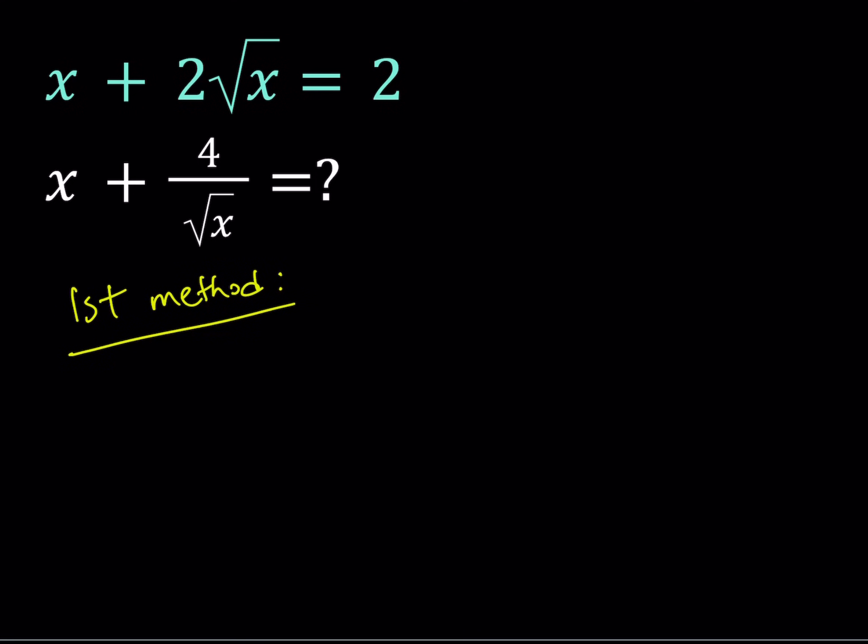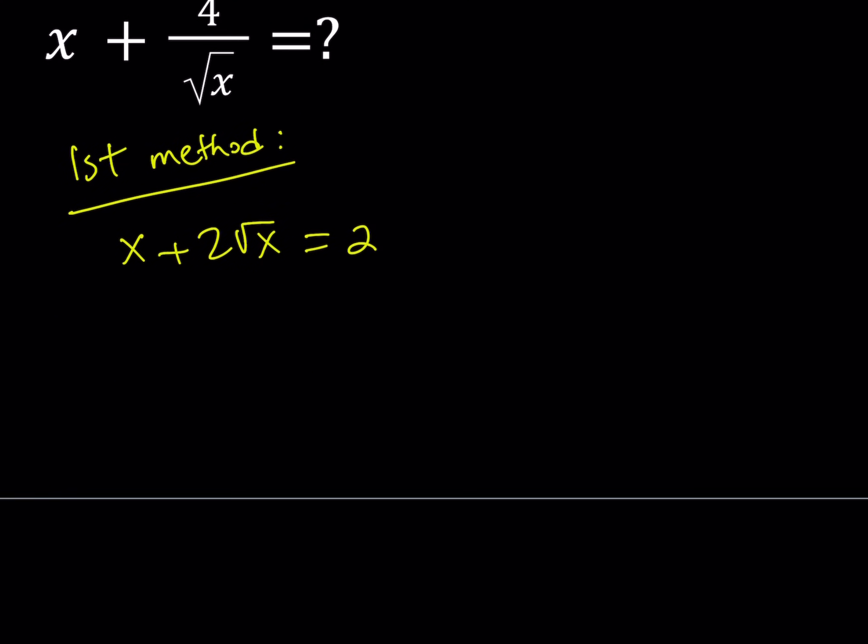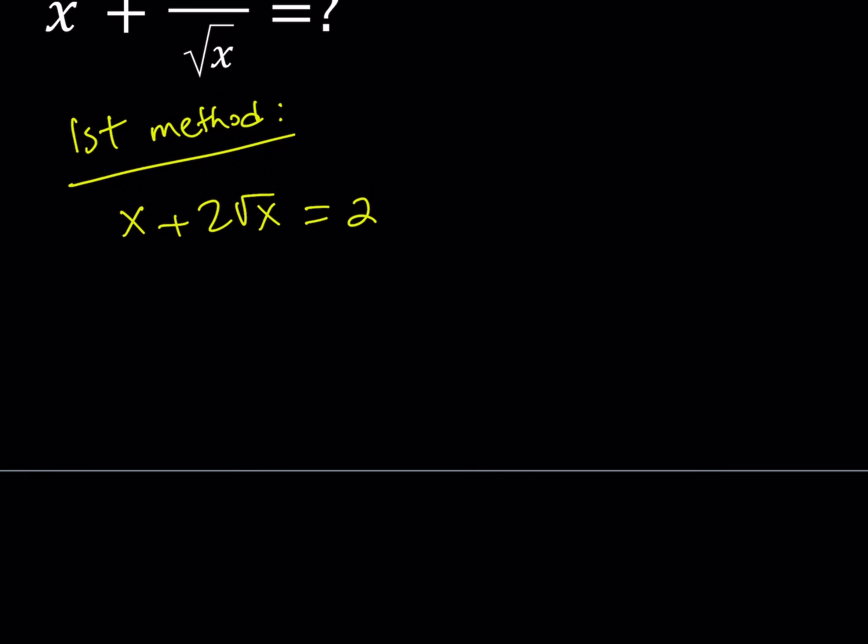For the first method, we're going to be solving for x. Let's go ahead and do that. I'll use substitution. So, we have x plus 2 root x equals 2. This is a radical equation. I could isolate the radical, square both sides, so on and so forth, but I'm going to be using a different approach. Let's use substitution. You know that's one of my favorite methods.